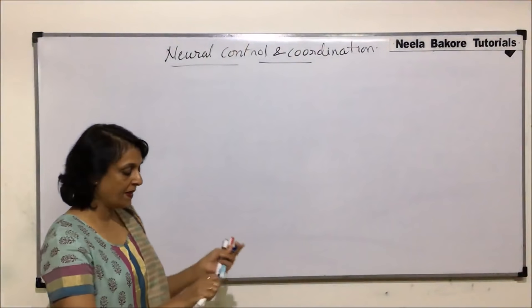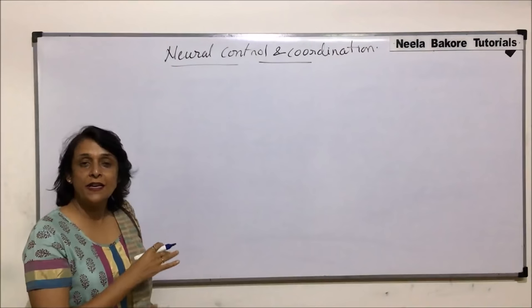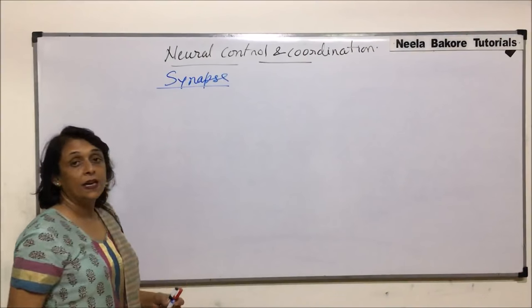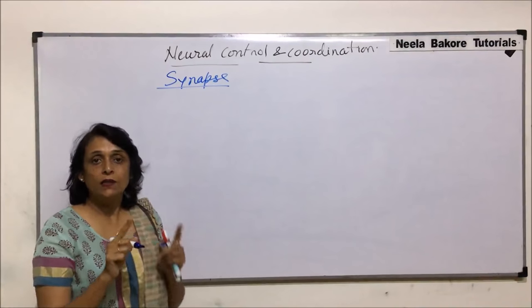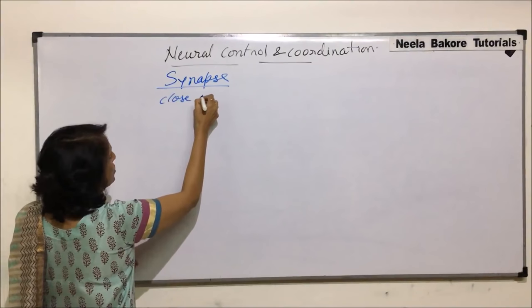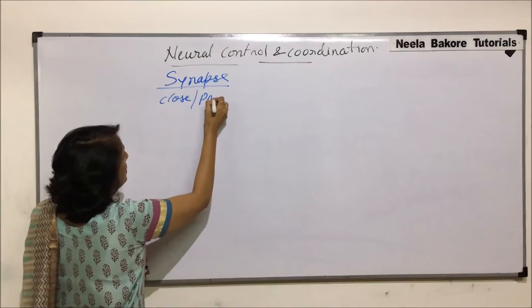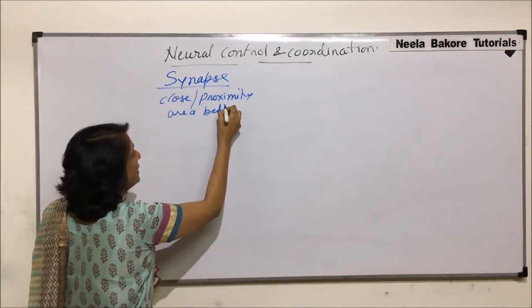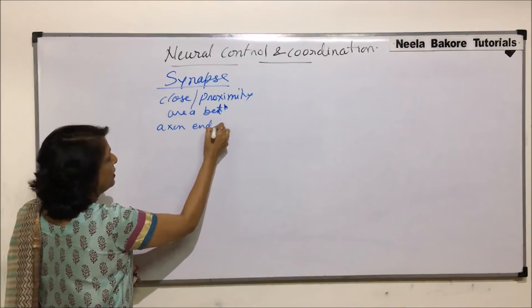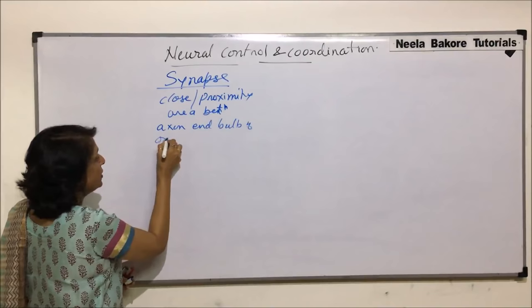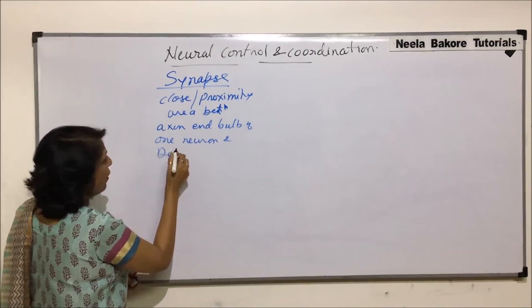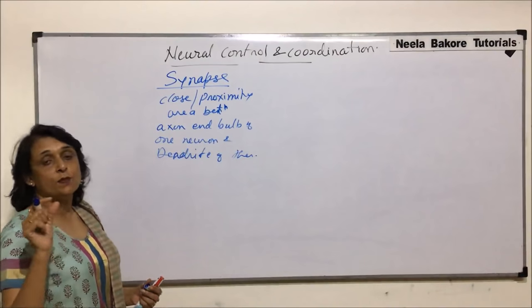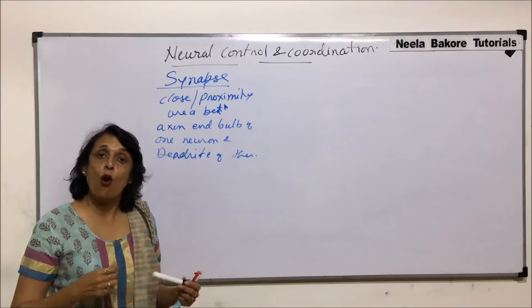We will take a synapse and first talk about its structure, then see how conduction takes place across it. A synapse is a close proximity area between the axon end bulb of one neuron and the dendrite of the other neuron, and there is a space between these two.